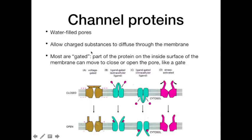Channel proteins are pores — like holes — that allow only one substance to pass through them. They exist to allow charged substances, usually ions, to diffuse through the membrane. We'll see what diffusion is shortly, but the key point is that channel proteins allow the movement of substances, usually ions, across the membrane.